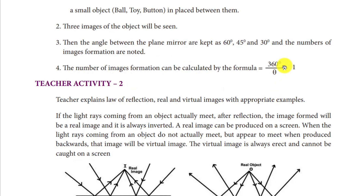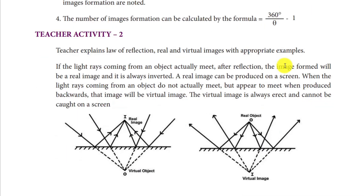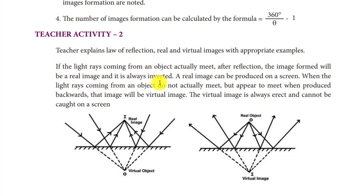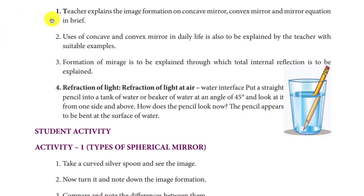The next activity looks at images formed in convex and concave mirrors. A real image can be produced on a screen. A virtual image is erect and cannot be produced on a screen. This is the main difference between real and virtual images.